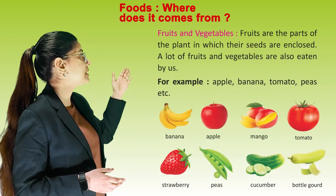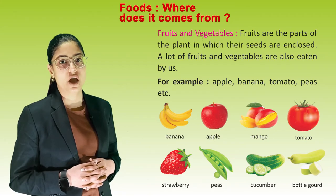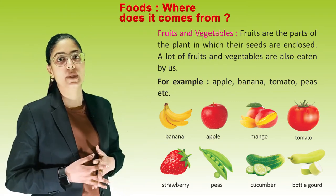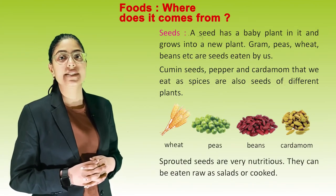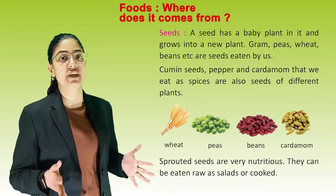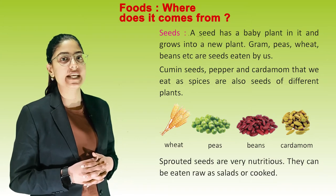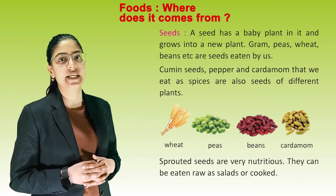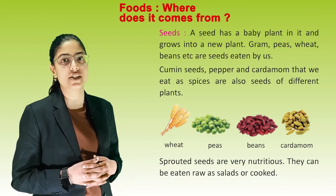Fruits and vegetables: fruits are the parts of the plant in which their seeds are enclosed. A lot of fruits and vegetables are also eaten by us, for example apple, banana, tomato, and peas. Seeds: a seed has a baby plant in it and grows into a new plant. Gram, peas, wheat, etc. are seeds eaten by us. Cumin seeds, pepper and cardamom that we eat as spices are also seeds of different plants. Sprouted seeds are very nutritious and can be eaten raw as salads or cooked.